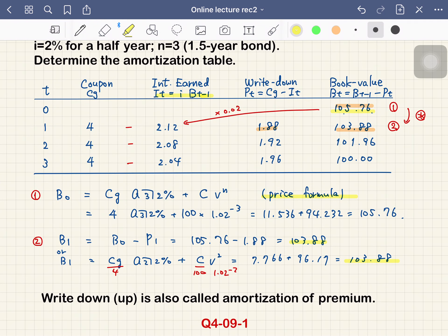One remark: the difference from 105.76 to 103.88, which is 1.88, is called write down. This is also called amortization of premium. Initially we have a price of 105.76, and finally we have 100, so we amortize the difference of 5.76 dollars over 1.5 years. This is also called amortization of premium.